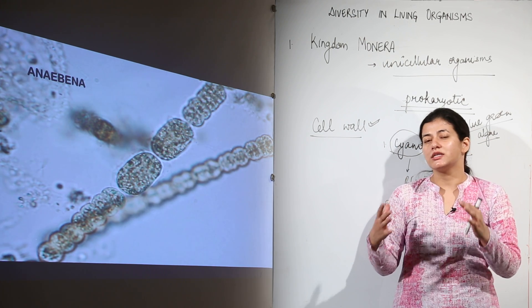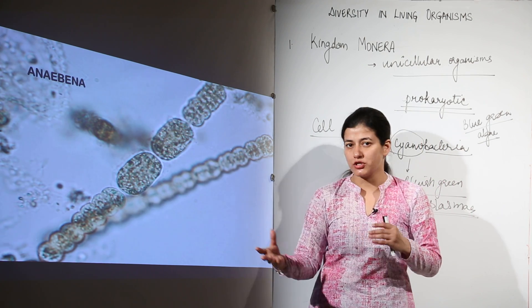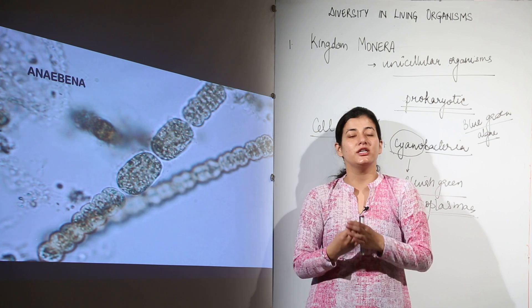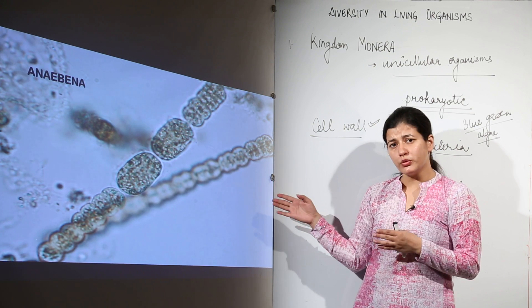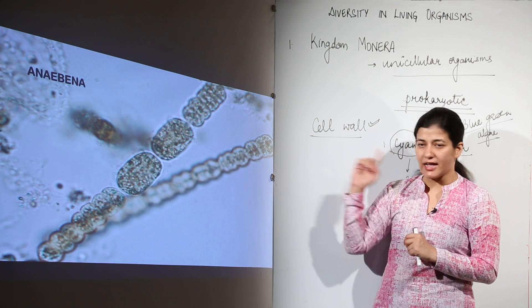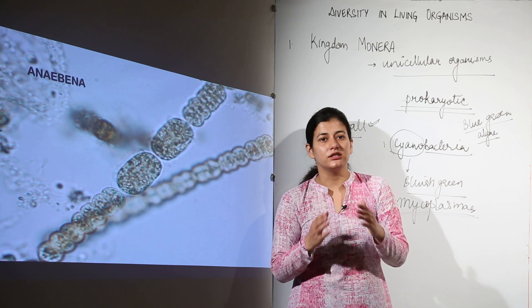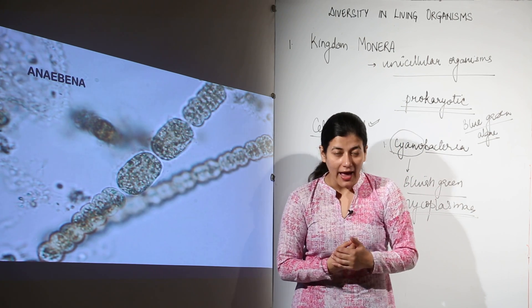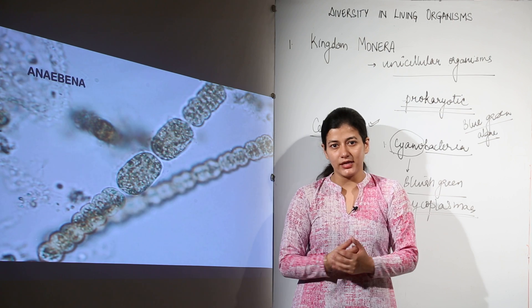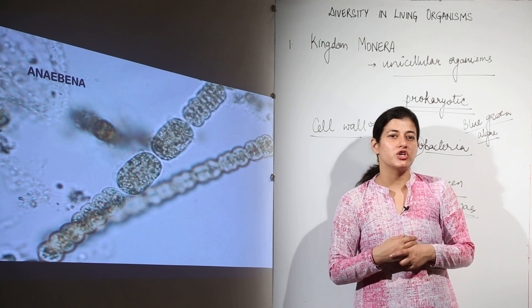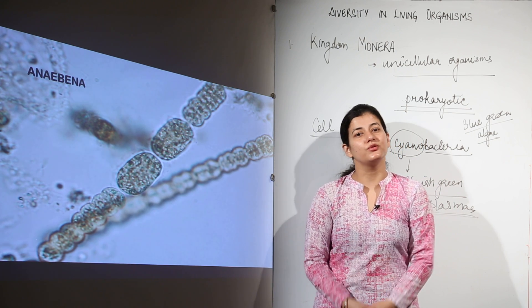Anabaena and cyanobacteria are very important for nitrogen fixation on Earth. Nitrogen fixation is important because it takes atmospheric nitrogen and puts it into the food chain. Nitrogen is part of proteins and nucleic acids, which are the building blocks of life. Other bacterial examples in Kingdom Monera include lactic acid bacteria responsible for curdling milk, and bacteria responsible for fermentation. This kingdom is exclusively prokaryotic.